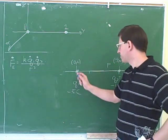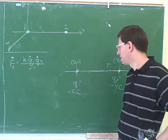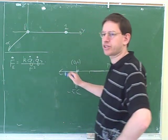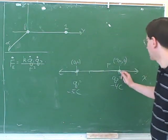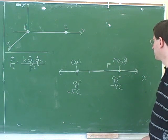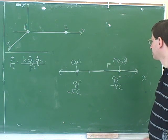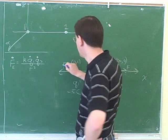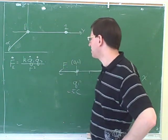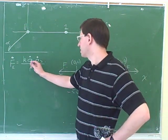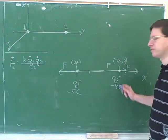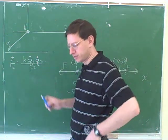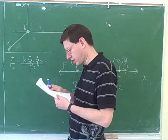What would be the direction of the force on Q1 here? To the left — the negative x direction. And the direction of the force on Q2 is to the right, the positive x direction. For the magnitudes, we'd plug in 5 for Q1 and 4 for Q2 — we don't bother plugging in the negative signs again.